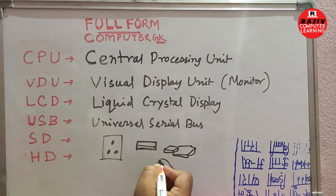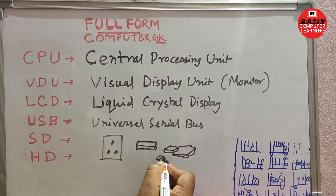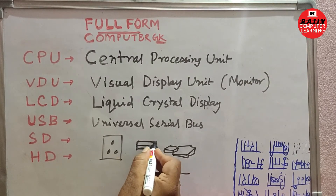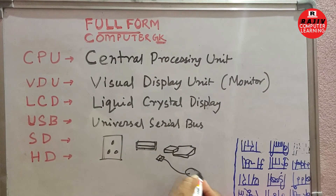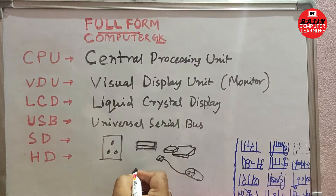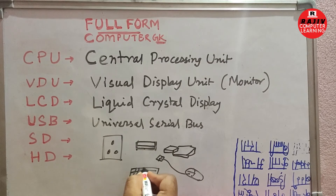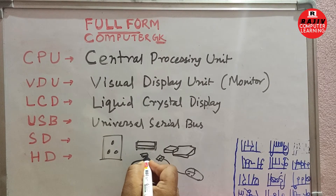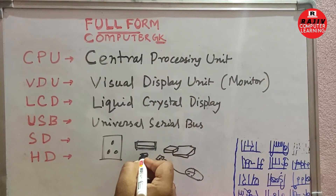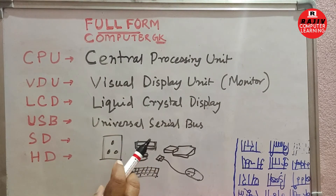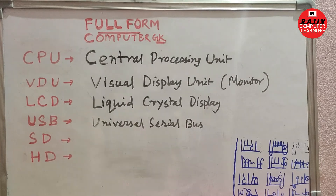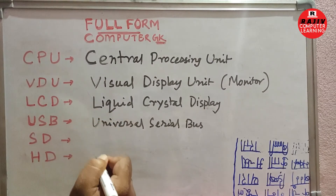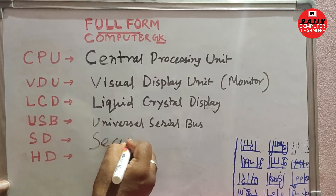For a USB mouse, there is a cord with a USB plug at the end. You insert the USB plug into the USB port of the computer to connect the mouse. Similarly, a keyboard is connected through a wire with a USB connector at the end, which you plug into the USB port. So, the USB port is a type of socket used in computers.